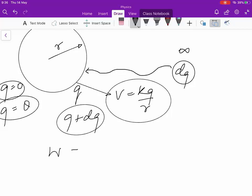So, work done by the external agent in adding additional charge dq is dq into the potential difference, which is kQ·dq/r.